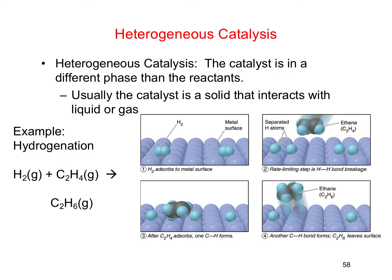When we talk about catalysts, we often talk about heterogeneous and homogeneous catalysts. In the case of a heterogeneous catalyst, the catalyst is a different phase than the reactants. For example, if the reactants are all gases, the catalyst in this case is a metal surface — a solid metal, obviously a different phase than the gas-phase reactants.